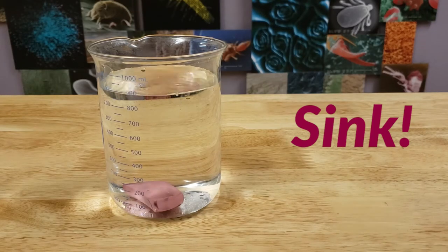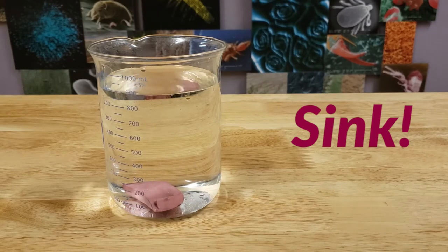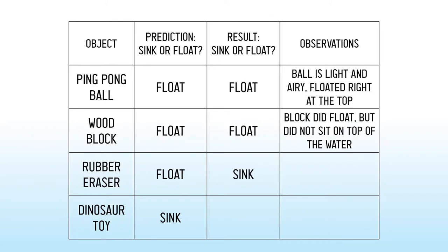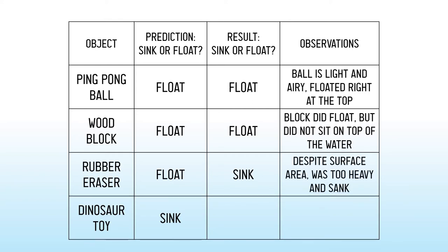Next, the rubber eraser. Even though the eraser is flat, kind of like a raft or a boat, it was still too heavy and sank to the bottom. So in this case, my prediction was incorrect.